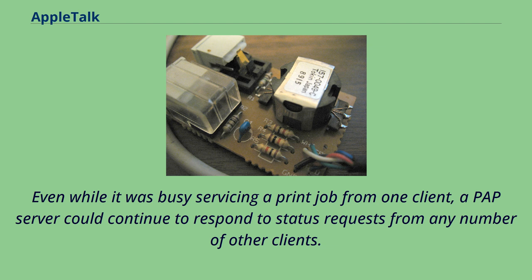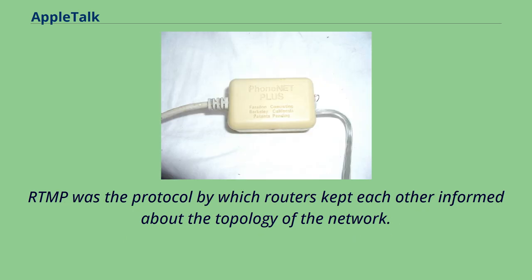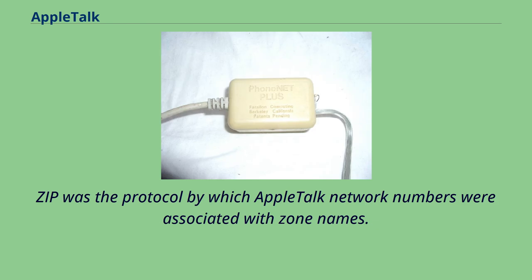RTMP was the protocol by which routers kept each other informed about the topology of the network — the only part of AppleTalk that required periodic unsolicited broadcasts. Every 10 seconds, each router had to send out a list of all the network numbers it knew about and how far away it thought they were. ZIP was the protocol by which AppleTalk network numbers were associated with zone names. A zone was a subdivision of the network that made sense to humans, and while a network number had to be assigned to a topologically contiguous section of the network, a zone could include several different discontiguous portions.